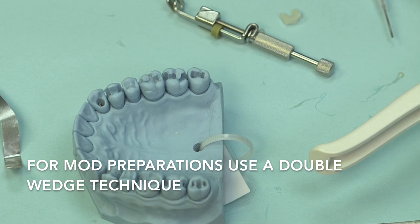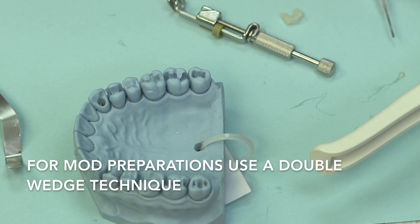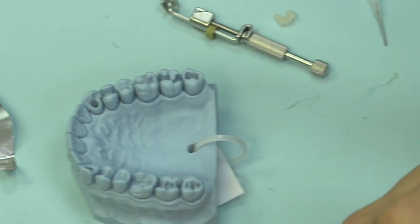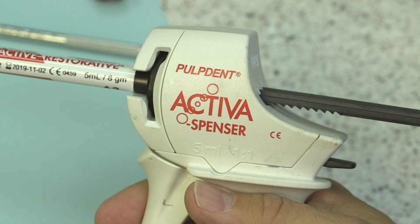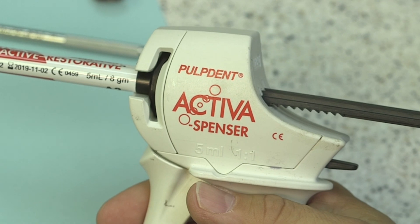So whether you're using a traditional type of composite or an injectable type of material like Activa, you have to create your contacts in your matrix band. That's a very important first step.